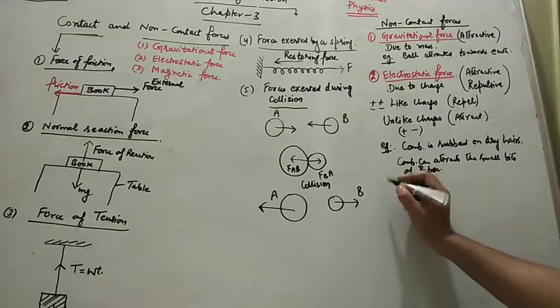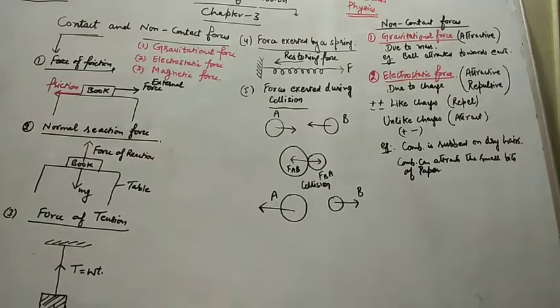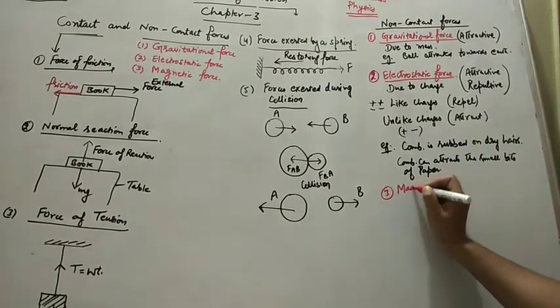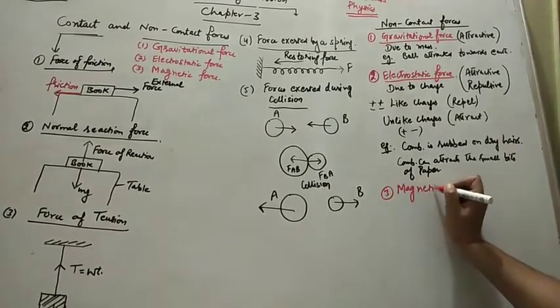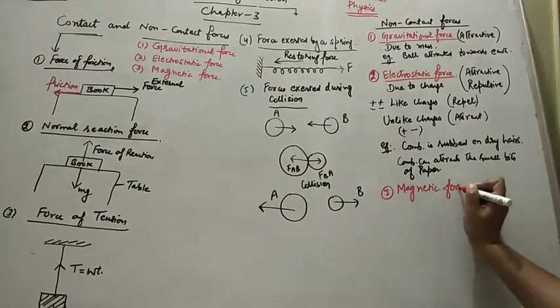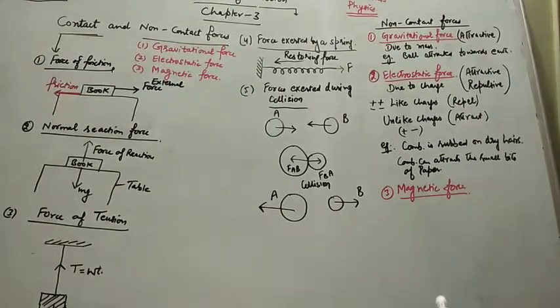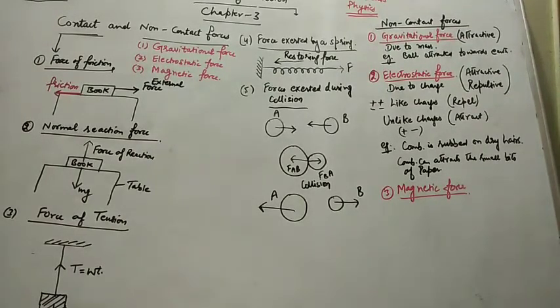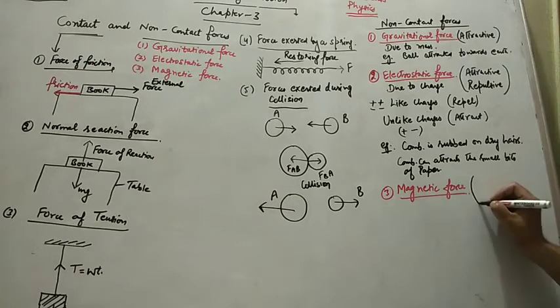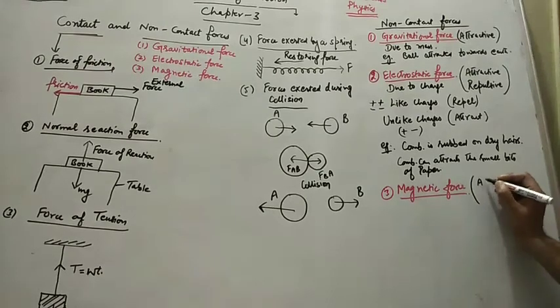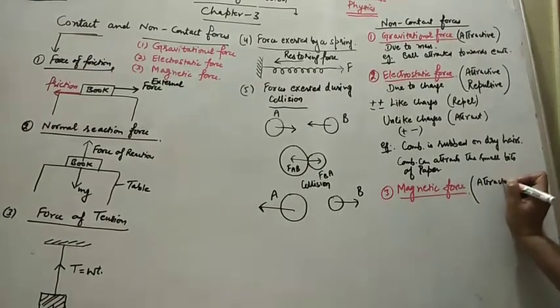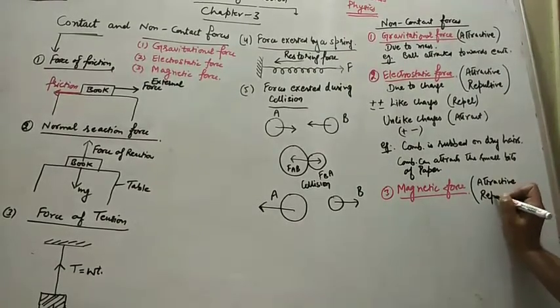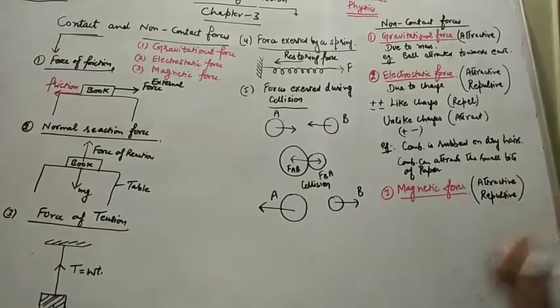Third is magnetic force. Two like magnetic poles repel and two unlike magnetic poles attract each other. This force can also be attractive as well as repulsive in nature.